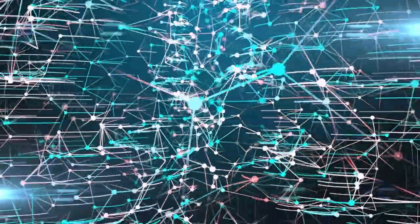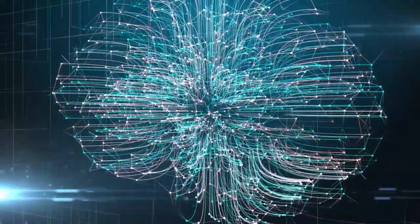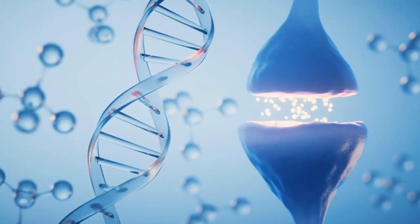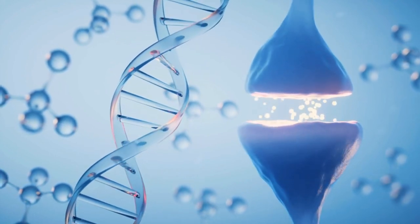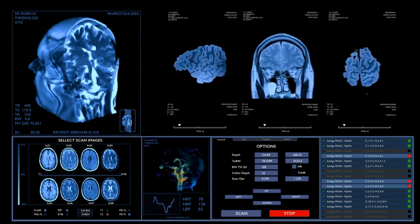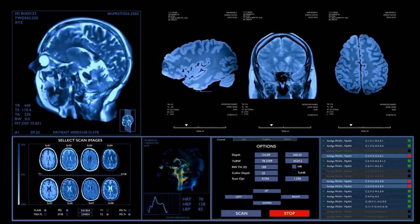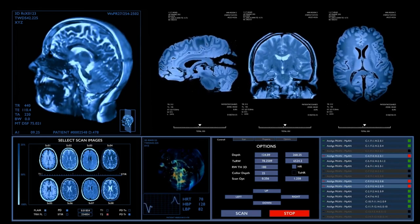Moreover, the potential applications of this gel-based electrode go beyond basic functionality. By fine-tuning the gel's composition, it could be possible to target specific areas of the brain based on their unique chemical profiles. This opens up exciting possibilities for precise interventions in areas such as epilepsy, where isolating and treating the source of seizures could become a reality.